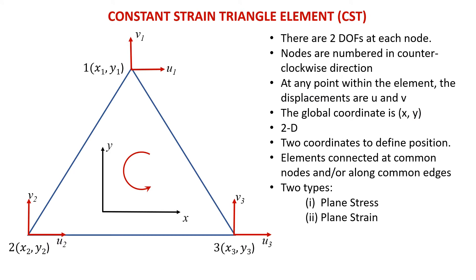In order to form triangular elements, it requires at least 3 nodes so that it makes possible to create a triangular shape — for example, node 1, node 2, and node 3. These nodes are numbered according to counterclockwise directions. We can start at any point as our node 1, as long as it follows the counterclockwise direction.